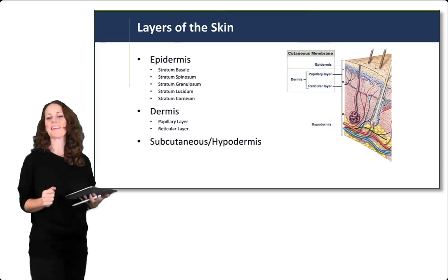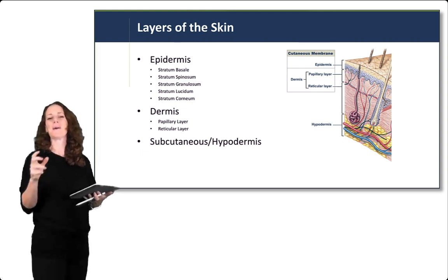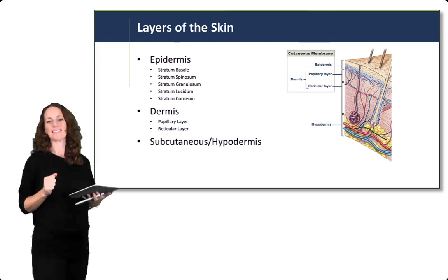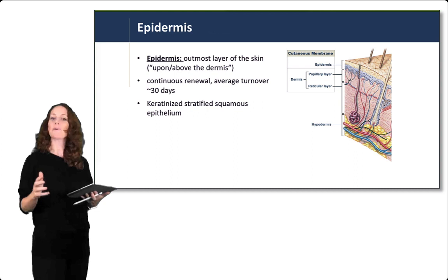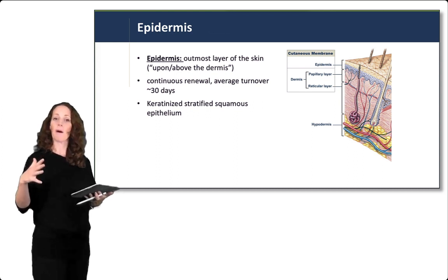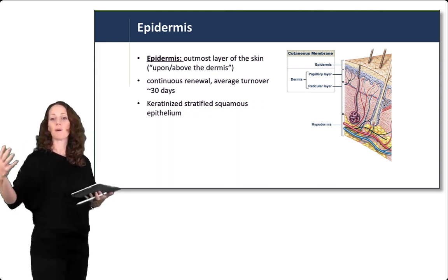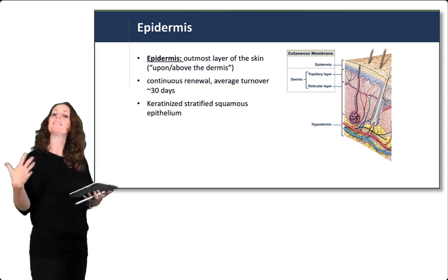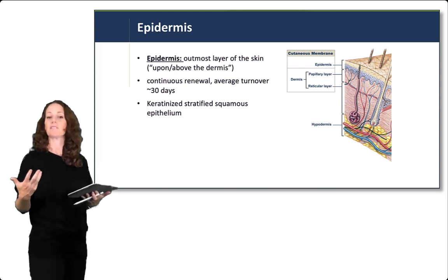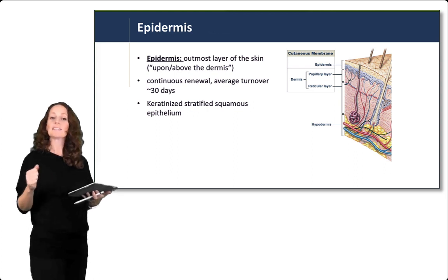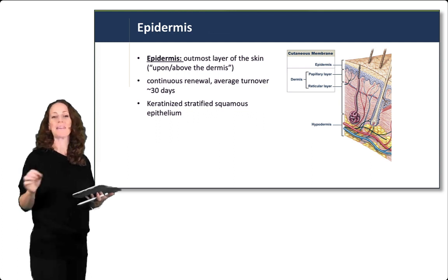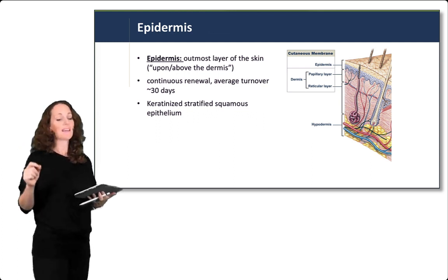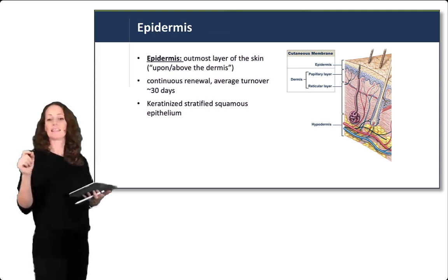Now let's start with the layers of the skin — we're going to go through each one in detail, starting with the epidermis. The epidermis is the outermost layer of the skin; epi means above or upon the dermis. The epidermis has continuous renewal, like other epithelial tissues, with an average turnover of about 30 days. It is composed primarily of keratinized stratified squamous epithelium — meaning many layers of squamous epithelium that contain keratin.